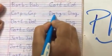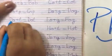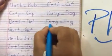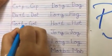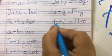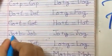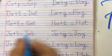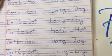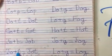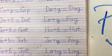D-O-G plus G — DOG. D-O plus T — DOT. F-O plus G — FOG. G-O plus T — GOT. H-O plus T — HOT. J-O plus B — JOB. J-O plus G — JOG. L-O plus G — LOG.